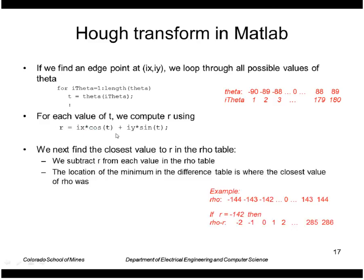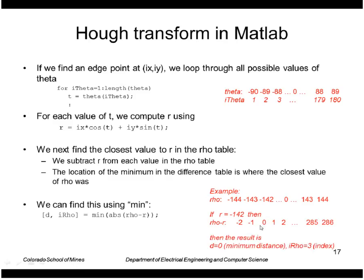We then have to figure out what index in the parameter array this value of rho corresponds to. The way we'll do that is we'll take the value we computed, let's say it's minus 142. We'll subtract that from our array of rho values. We would get minus 2, minus 1, 0, plus 1, plus 2, etc. We would find the minimum absolute value of this. That would correspond to this position. Then look for whatever index we have here.